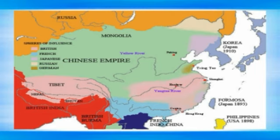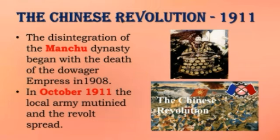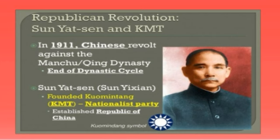Despite its incompetence and weakness, the Manchu government lasted until two years before the First World War. The Chinese Revolution of 1911: The disintegration of the Manchu dynasty began with the death of the Dowager Empress in 1908. The new emperor was two years old, and the provincial governors began to assert their independence. In October 1911, the local army mutinied and the revolt spread. Provincial governors removed the Manchu garrisons and proclaimed their independence.